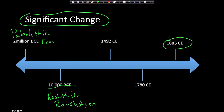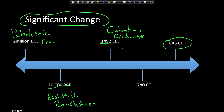The Neolithic Revolution was the change from a hunter-gatherer lifestyle to an agricultural lifestyle, where people lived in permanent settlements. The next significant change occurred in 1492 and it was called the Columbian Exchange. This was when the new world met the old world, and disease, animals, and plants were exchanged or diffused between them. In 1780, the Industrial Revolution began.